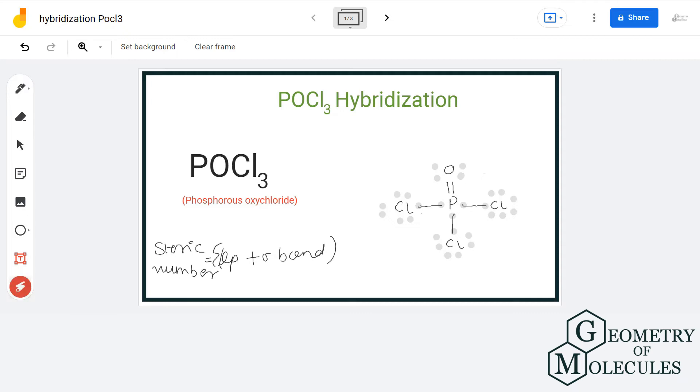Let us have a look at the Lewis structure of phosphorous oxychloride. We can clearly see that central atom phosphorous has formed three sigma bonds with three chlorine atoms and one double bond with one oxygen.